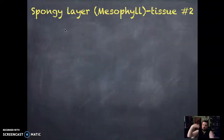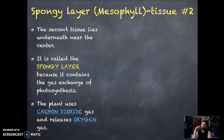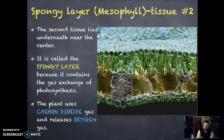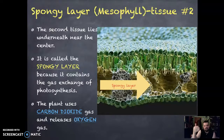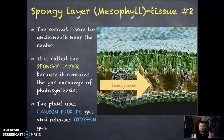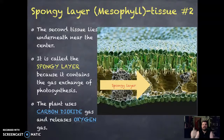As we go down into the middle, we have a layer called the spongy layer, or spongy tissue. It's slightly spongy because once photosynthesis happens in the palisade layer, it transfers the gases of photosynthesis — carbon dioxide and oxygen — down into this layer. Those gases get trapped here, waiting to be expelled or used up. So it goes: palisade layer, followed by the spongy layer.